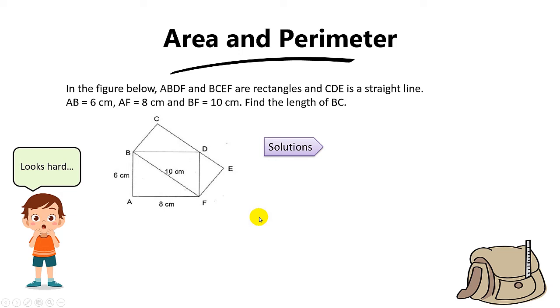Hi there, let's go through this pretty tricky question on area and perimeter. This question is actually from a past PSLE paper and I found this question to be pretty tricky. This boy over here thinks that the question looks pretty hard, but actually if you know the trick behind this, then this will be very easy.